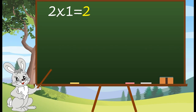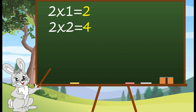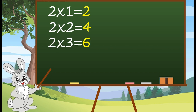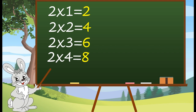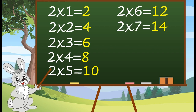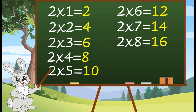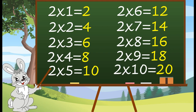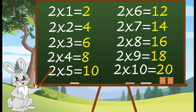2 1's are 2. 2 2's are 4. 2 3's are 6. 2 4's are 8. 2 5's are 10. 2 6's are 12. 2 7's are 14. 2 8's are 16. 2 9's are 18.